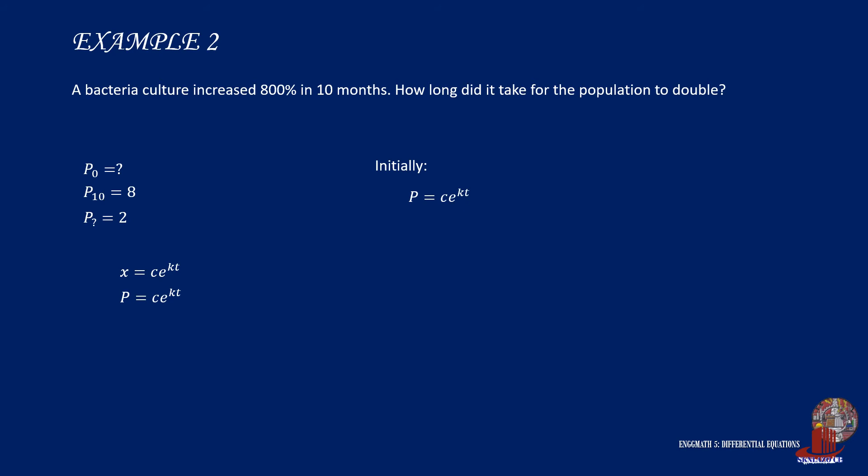which is equal to c times e raised to k times 0, where e raised to 0 is 1, so c is p0. So the working equation is modified to p is equal to p0 times e raised to k times t.